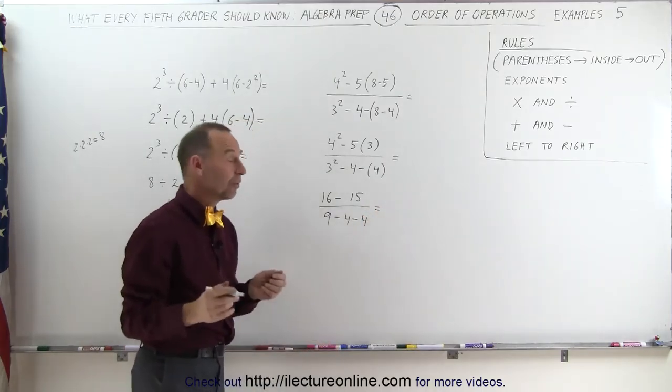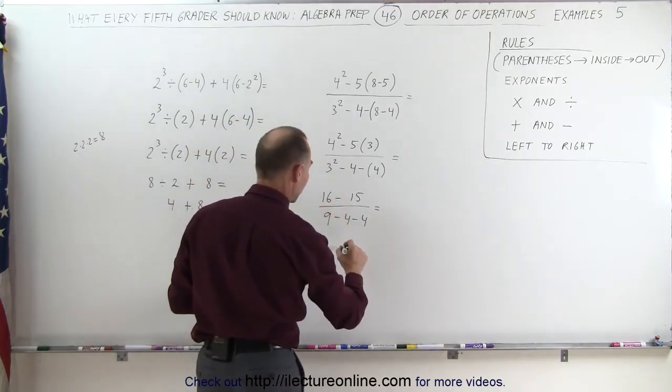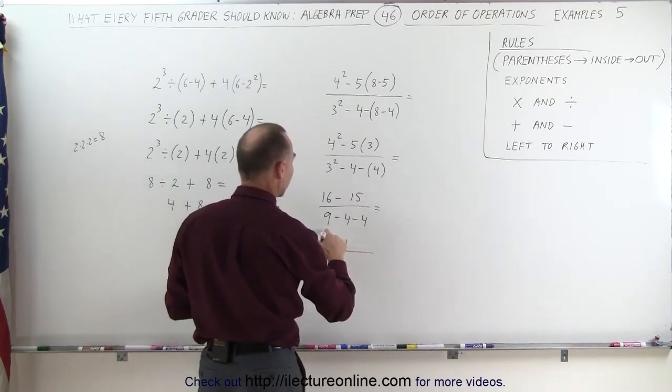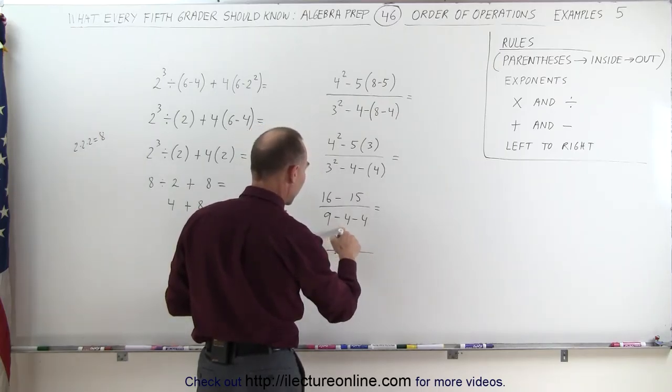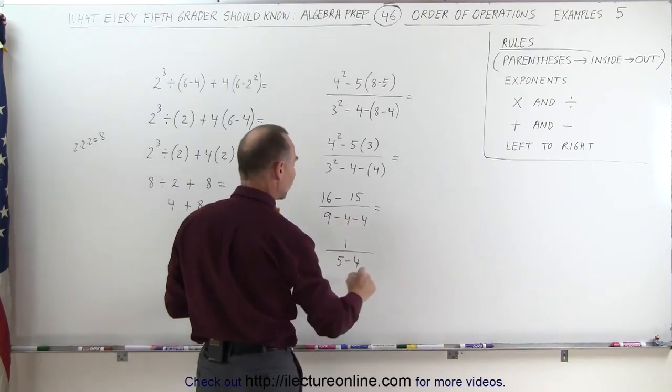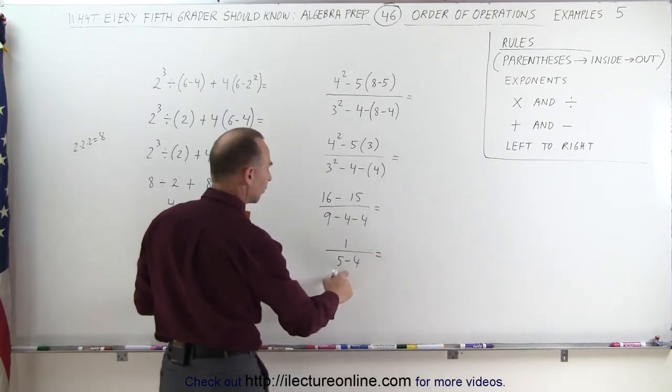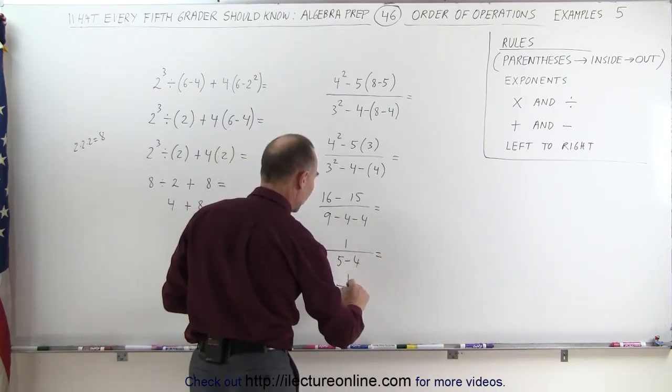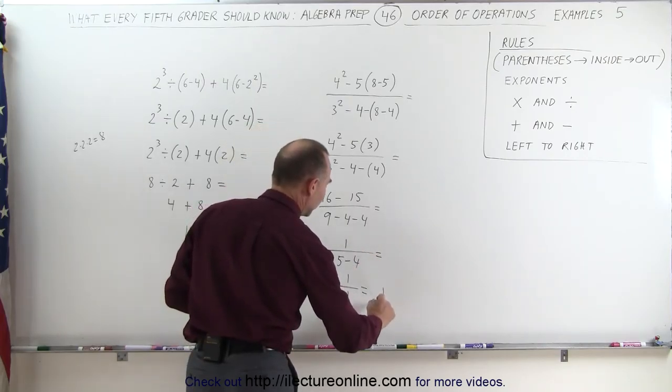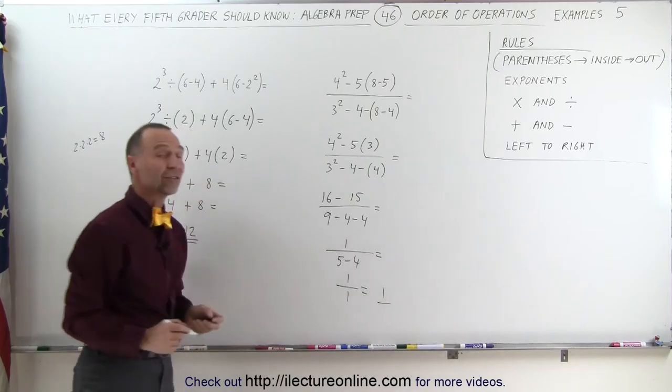Now the numerator simplifies to 16 minus 15 which is 1 divided by 9 minus 4, well 9 minus 4 that is 5 and we still have a minus 4 there and finally we can simplify the denominator to 1 divided by 5 minus 4 is 1 and 1 divided by 1 is equal to 1 and that's the final answer there.